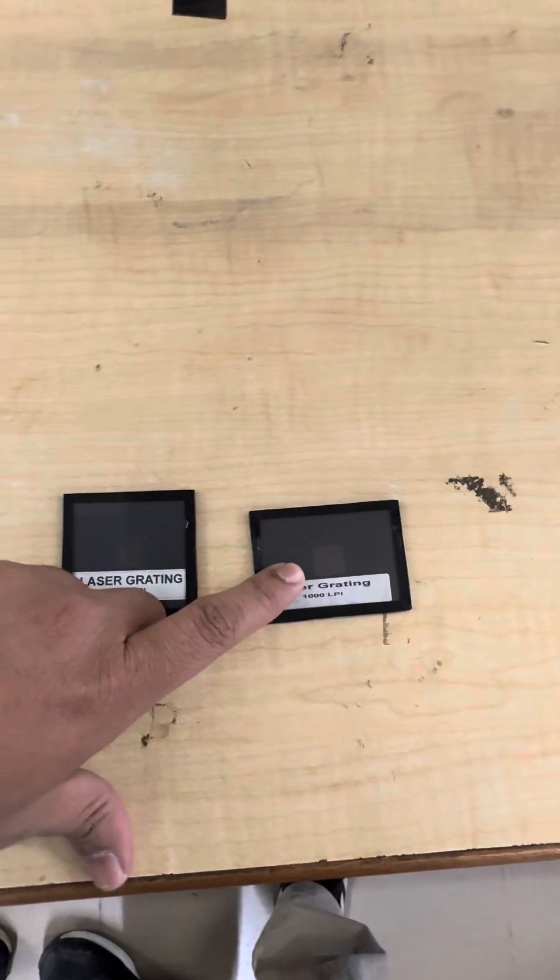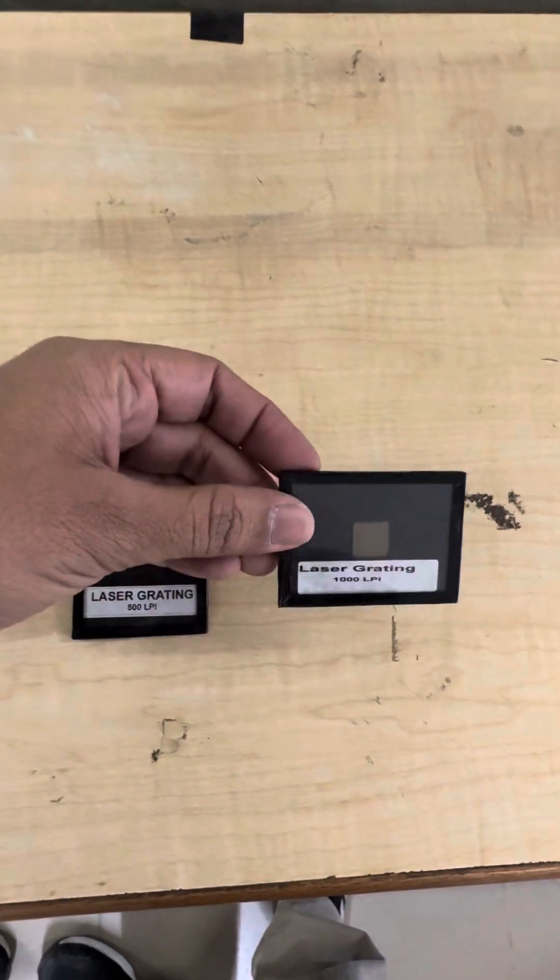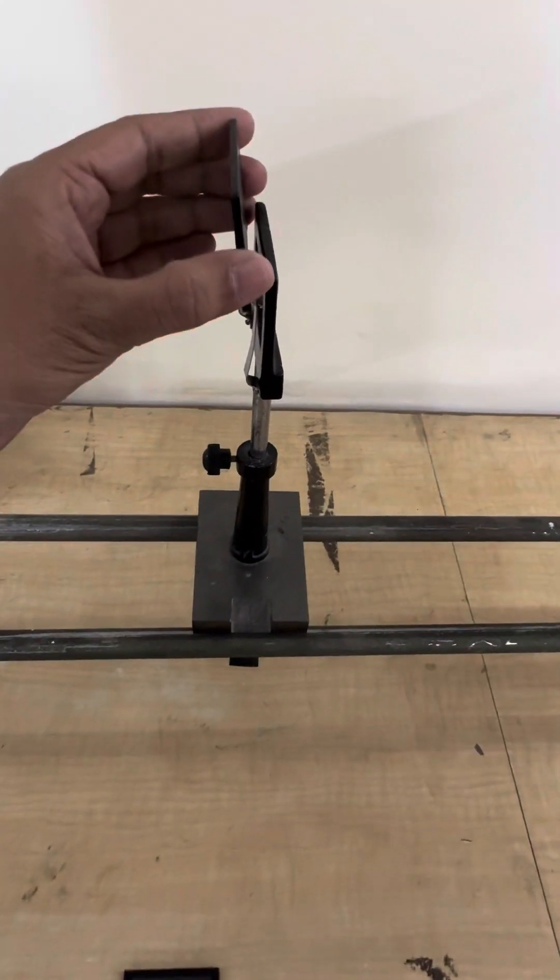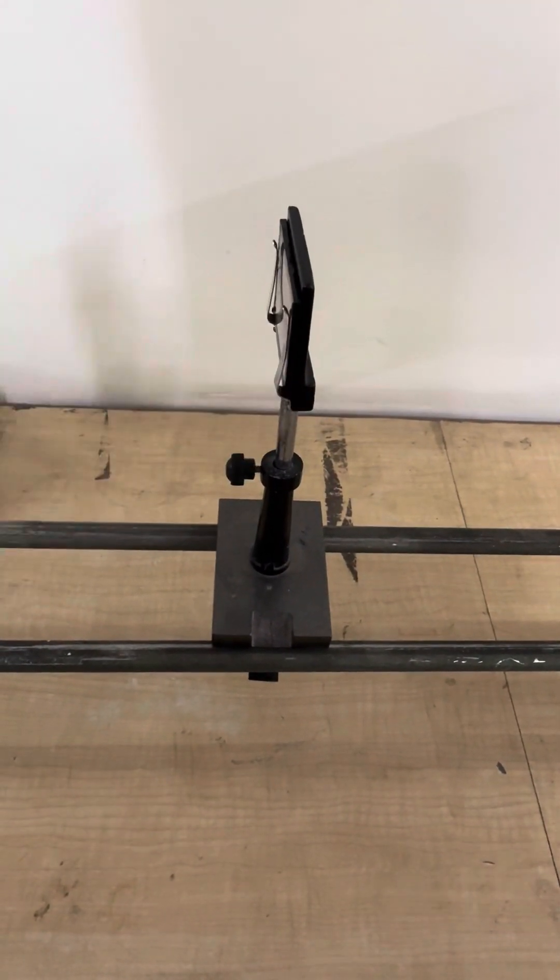So either we can use 500 LPI grating or we can use the 1000 LPI. Let's use the 1000 LPI laser grating and place it inside this stand. So we have placed the laser grating element inside this stand.